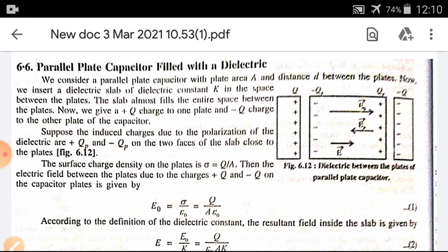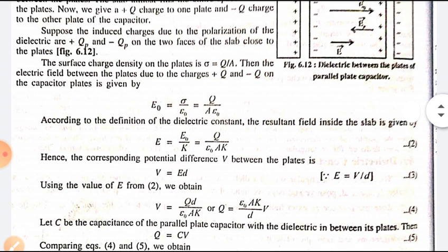According to the definition of the dielectric constant, the resultant field inside the slab is given by E = E₀/K. Substituting the value of E₀ from equation number 1, we get E = Q/(ε₀AK). This is equation number 2.